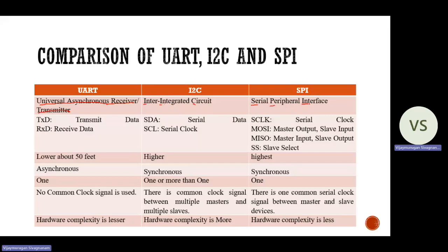The second point is related to transmit and receive signals — how to transmit and receive data. In UART, we use two signals: one called TxD, which represents transmit data, and another called RxD, which represents receive data.